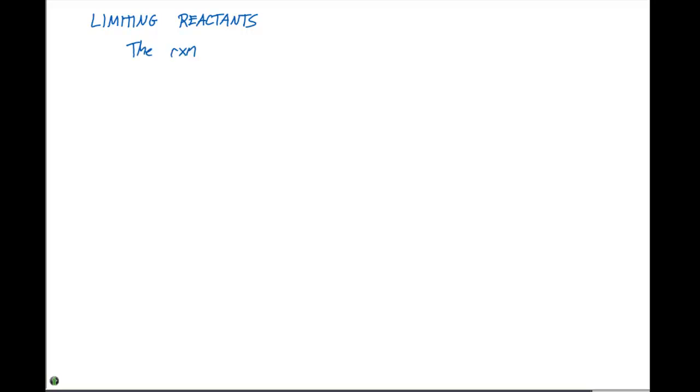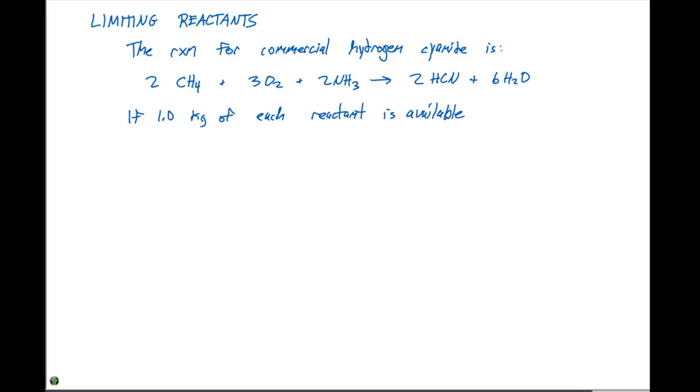So, we can say that the reaction for commercial hydrogen cyanide is 2CH4 plus 3O2 plus 2NH3 giving 2HCN plus 6H2O. If 1.0 kilograms of each reactant is available, how much HCN could be produced?